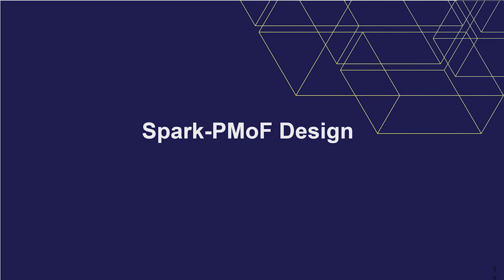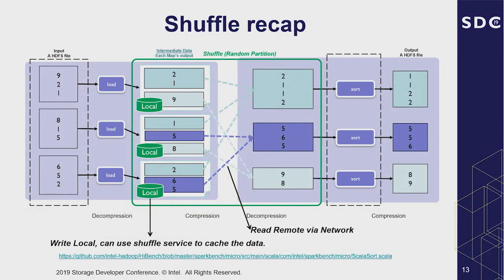Here is the Spark PMOF design. Shuffle is not a new concept, but in the map and reduce framework, shuffle is a bridge between map and reduce. The reduce stage needs to read map output files through shuffle, which is a process of redistributing data between partitions. This may cause data movement crossing JVM processes or even across executors on different nodes, which means the shuffle phase involves network IO and disk IO. Many operations require shuffle, like join and group-by. So shuffle performance is critical for Spark performance.